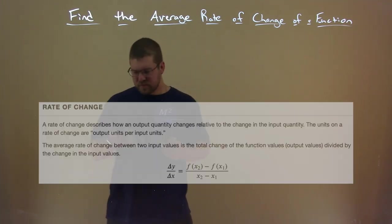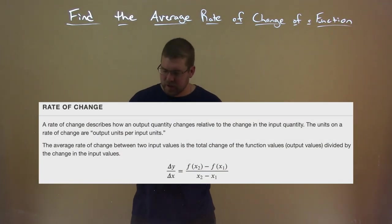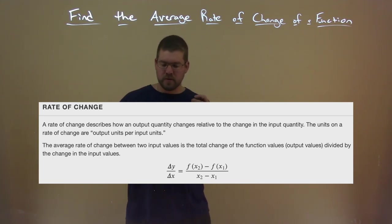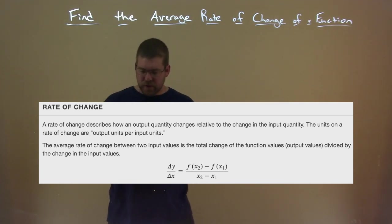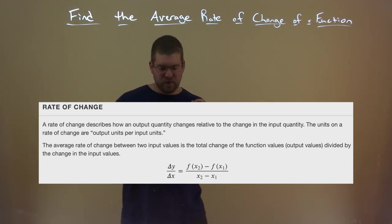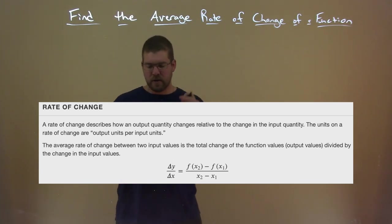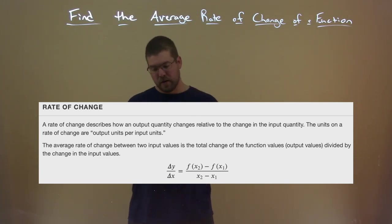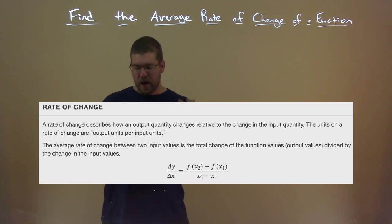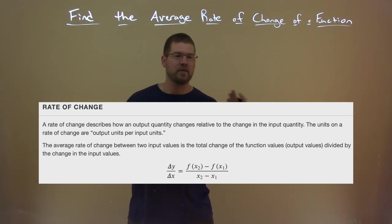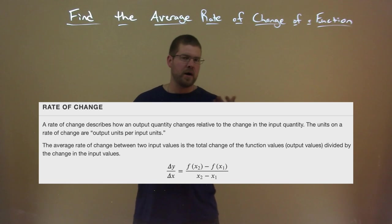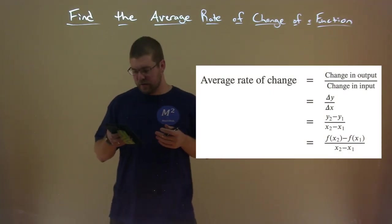The official definition: the rate of change describes how an output quantity changes relative to the change in the input quantity. The units on a rate of change are output units per input units. The average rate of change between two input values is the total change of the function values — output values — divided by the change in the input values. So we have delta y over delta x, which equals f(x₂) minus f(x₁) over x₂ minus x₁, where f(x₂) is like your y₂ and f(x₁) is like your y₁. The change in output over the change in input.